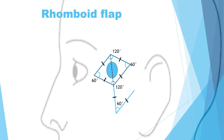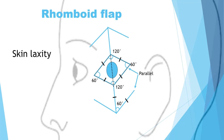Using this, you can actually come up with four different parallel lines where you could choose flaps from. Your decision-making process when choosing one of these four flaps would be where the skin laxity is, as the donor site will need to be closed directly, so you need to have skin laxity where you choose your flap from.